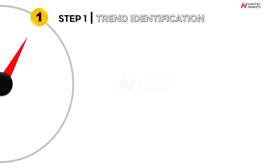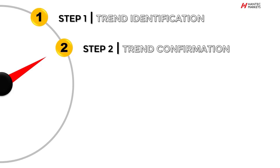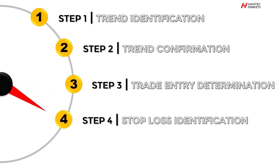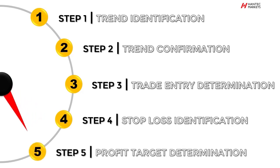The forex trading strategy which you're going to learn in this video is made up of five simple steps. The first step is trend identification. The second step is trend confirmation, and right after that the third step is trade entry determination. The fourth step is stop loss identification, and last but not least, the fifth step is profit target determination.